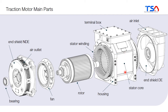Inside we have the rotor. The rotor is the rotating part, and it consists also of magnetic steel sheet and of conductors inside the rotor. In a few minutes we will see how it looks like exactly.